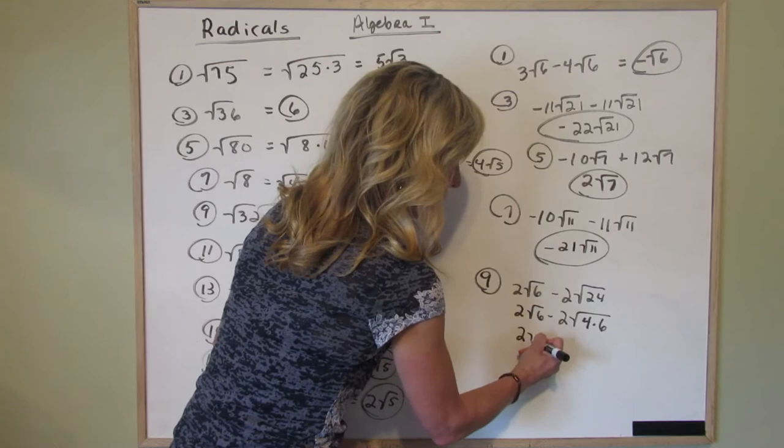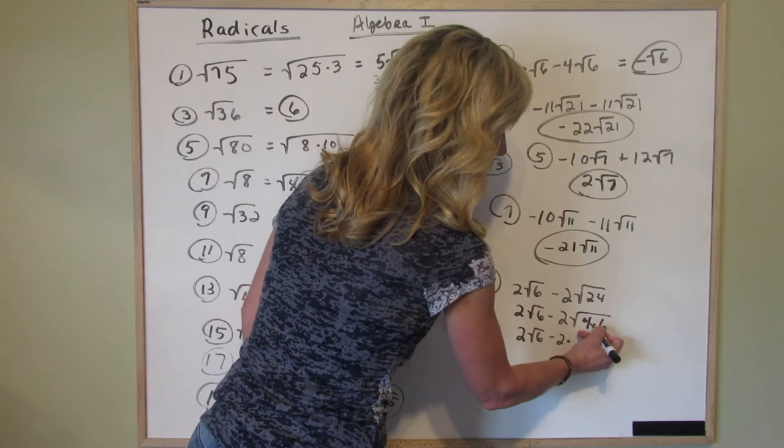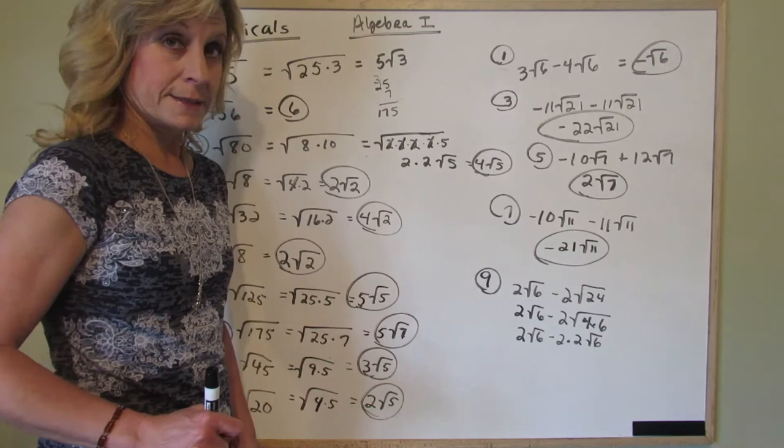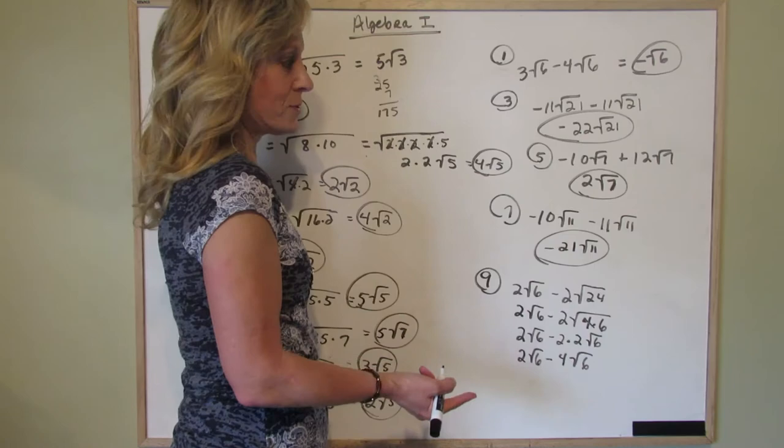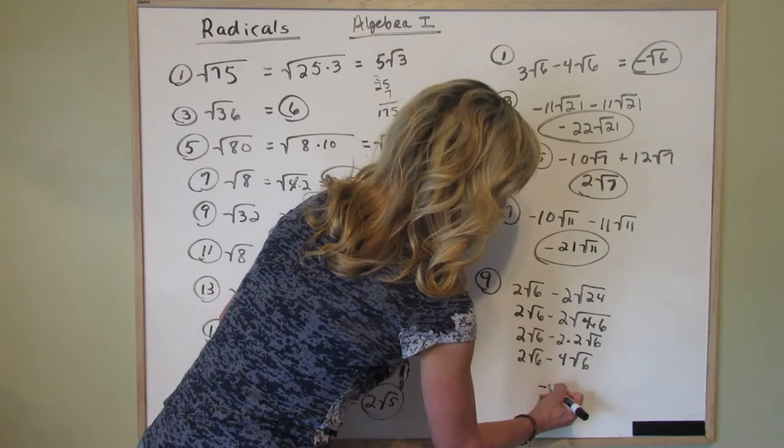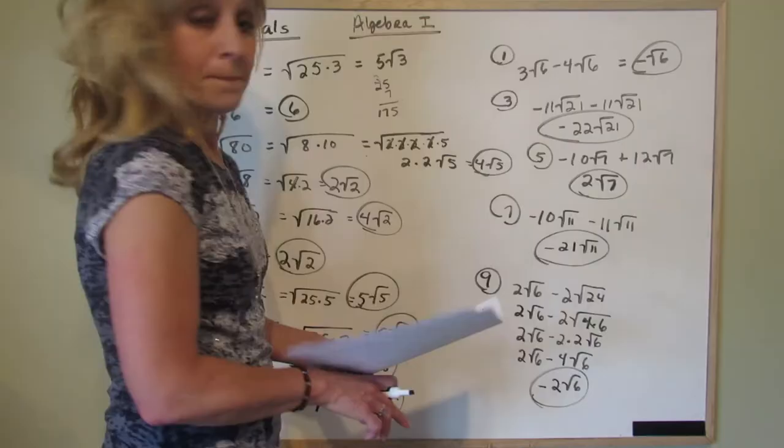Can't do anything with this. It's still 2 square roots of 6 minus 2 times, what's the square root of 4? 2. Bring that out. And guess what you're left with underneath? Square root of 6. A little bit of math. 2 square root of 6 minus 2 times 2 is 4 square root of 6. And now we have the same number under the square root. So the problem is easy. What's 2 minus 4? Negative 2. And your answer is negative 2 square root of 6.